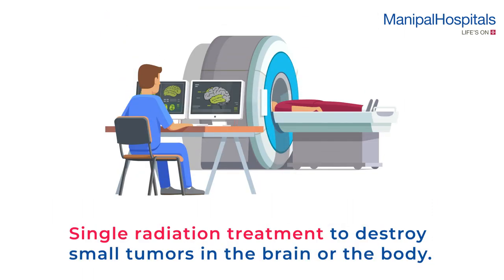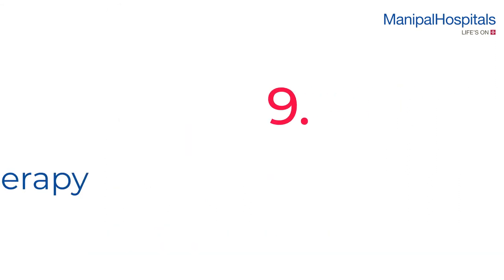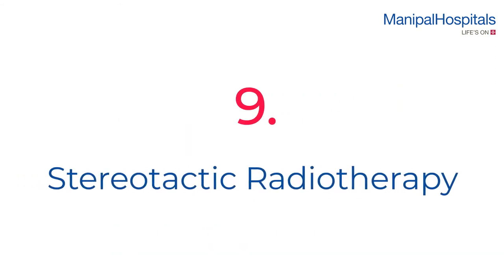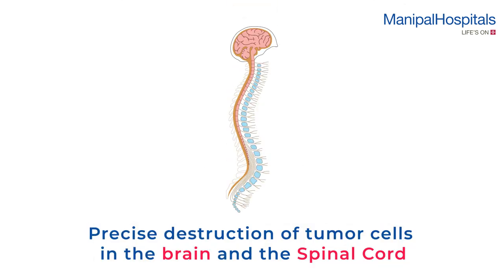Number eight: stereotactic radiosurgery. It involves a single radiation treatment to destroy small tumors in the brain or the body. Number nine: stereotactic radiotherapy. This treatment is also employed for the precise destruction of tumor cells in the brain and the spinal cord.